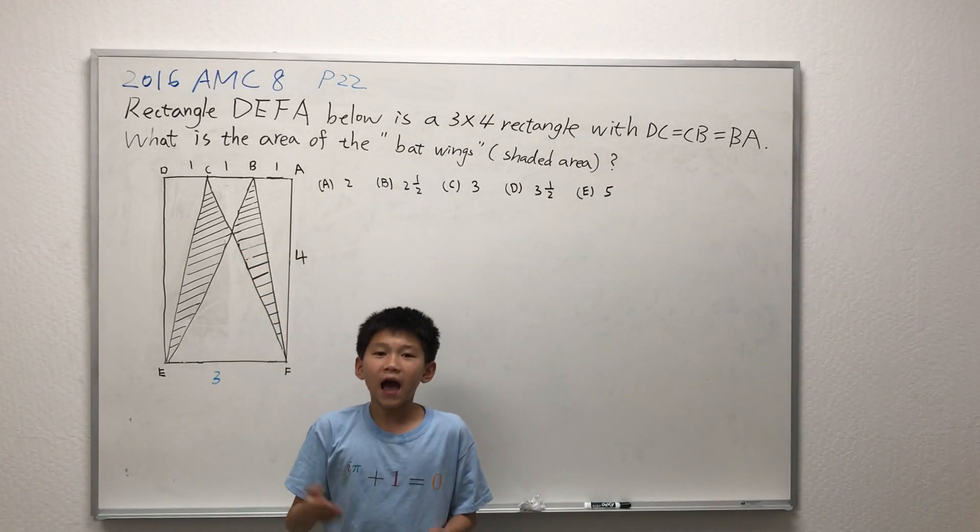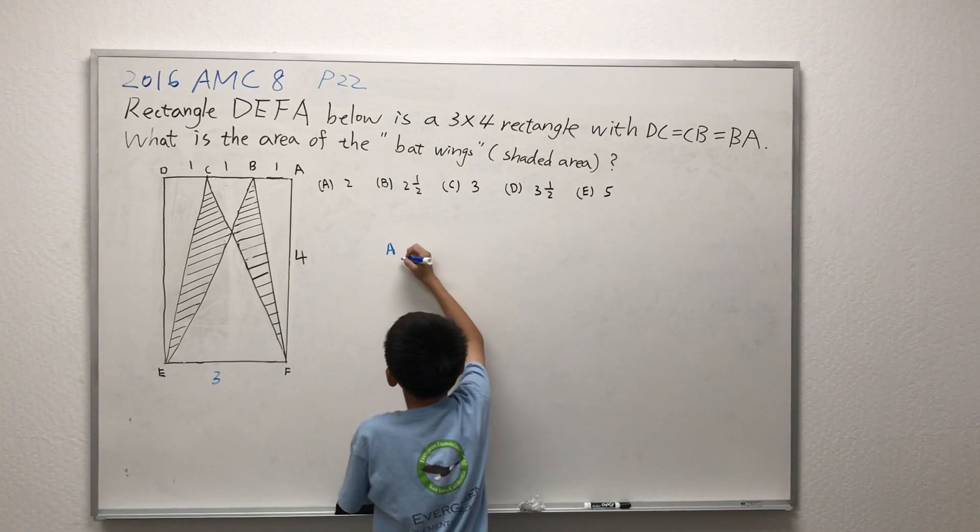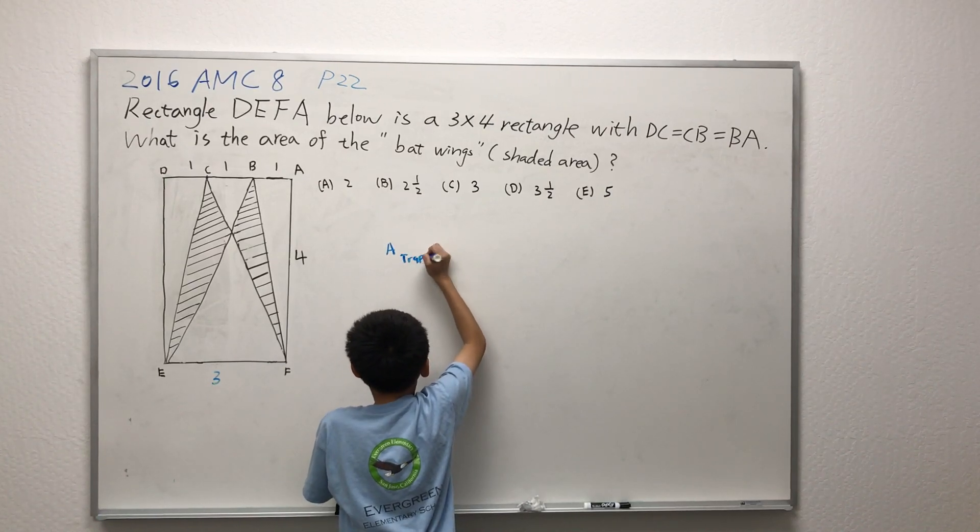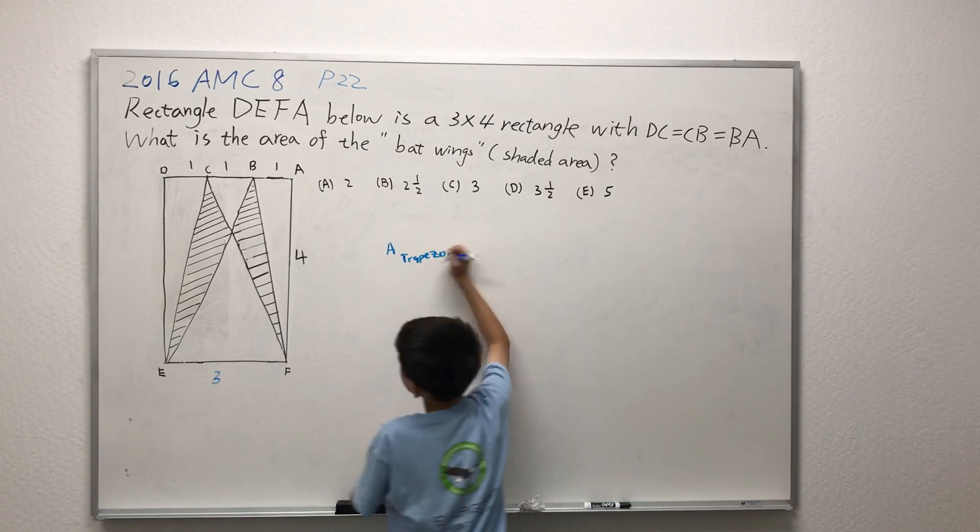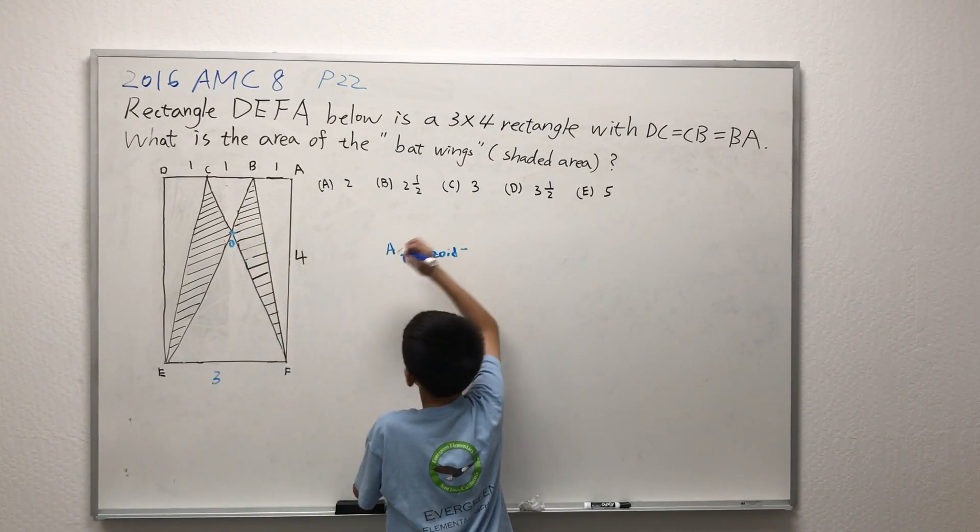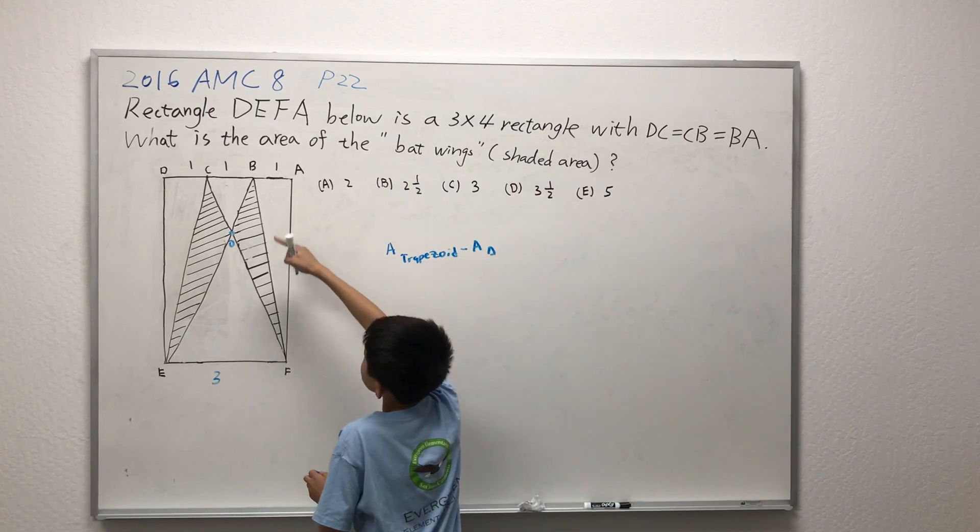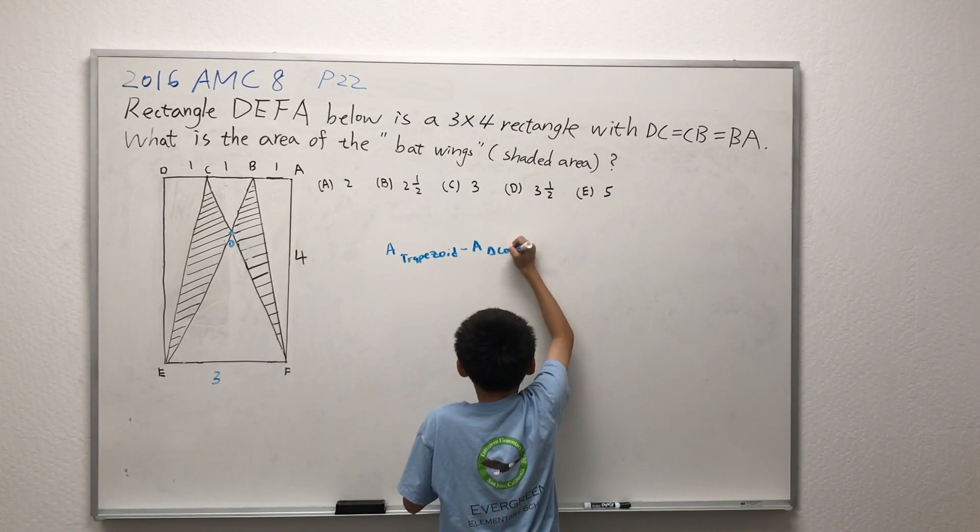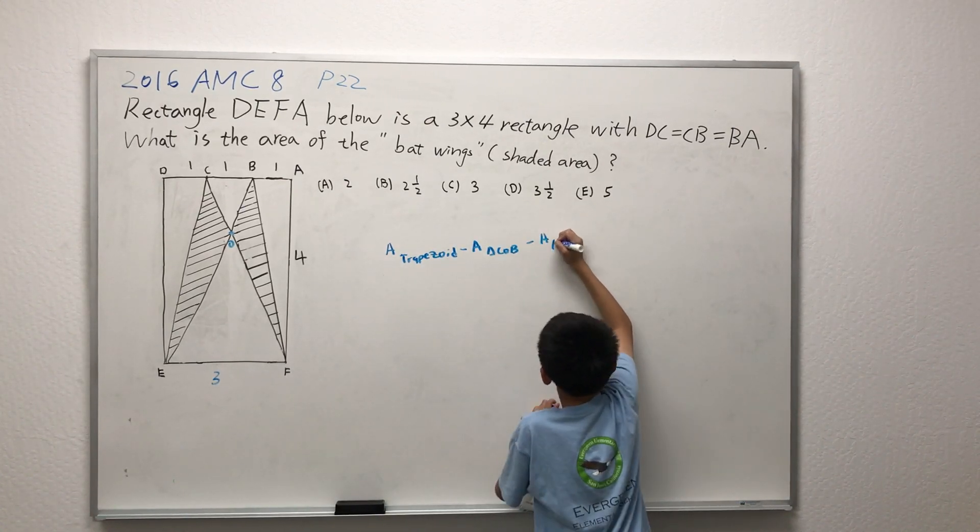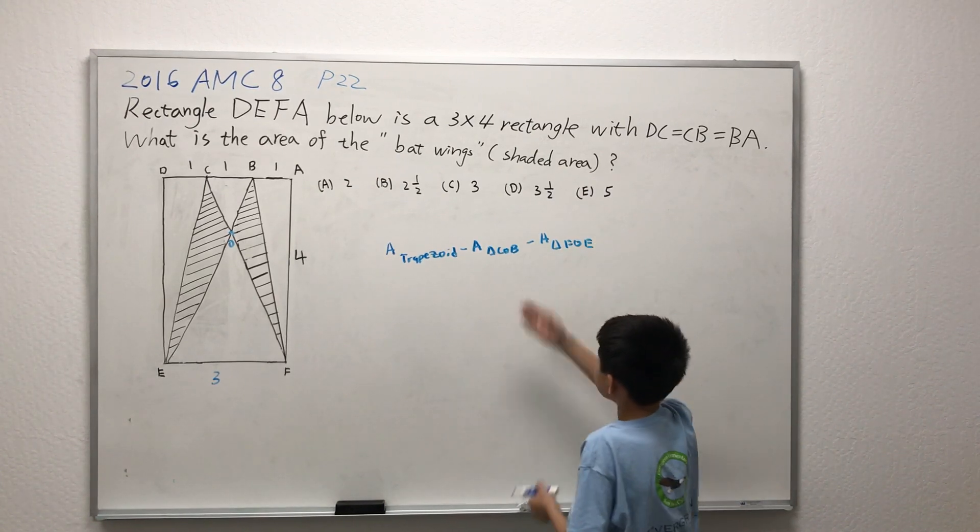But today, I'm going to do it where the area of the trapezoid CBEF is the big area. And we're going to be taking away, let this point be O, we're going to be taking away the area of triangle COB and minus the area of the triangle FOE. This will be our answer.